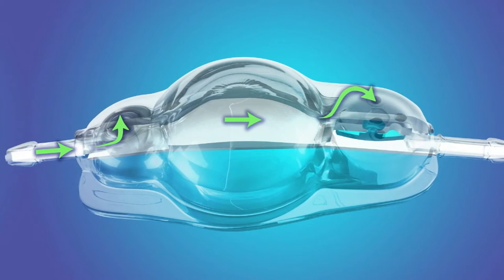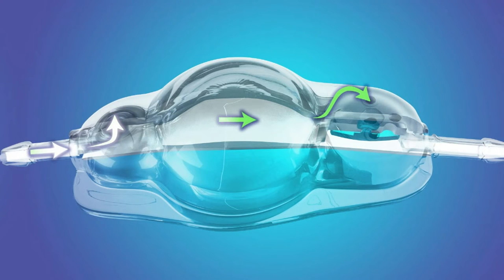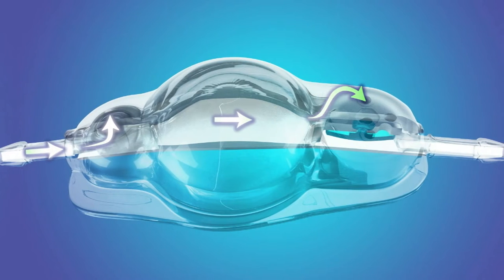As CSF flows through the contoured valve, it enters the inlet connector, flows by the proximal occluder into the central reservoir. For sampling CSF, the reservoir dome can be accessed using a 25 gauge or smaller non-coring needle.